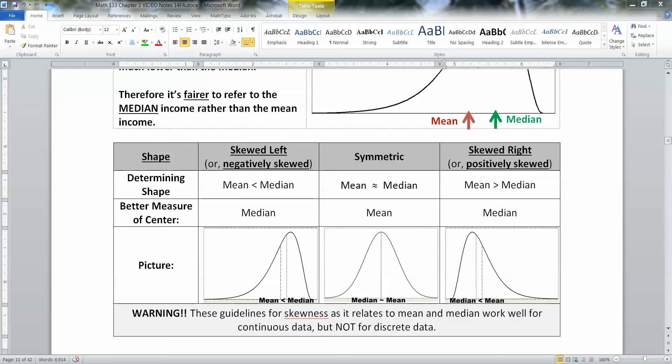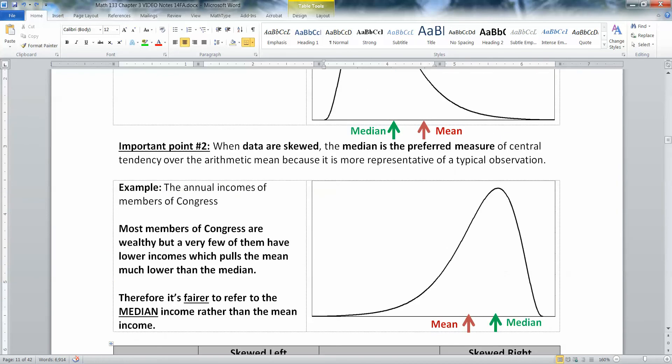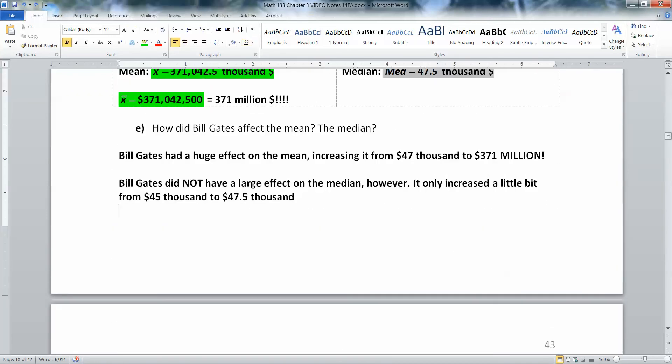Also keep in mind that this tends to work better for continuous data. This doesn't really work well for discrete data. The difference between discrete and continuous from section 1.1 is important to us. Discrete stuff will be in chapter six and continuous stuff will be in chapters 7, 8, 9, 10, 11, and 12. So they don't quite work the same. But in general, if it's skewed left, use the median. If it's skewed right, use the median. If it's roughly symmetric, they'll be basically the same, then you're better off using the mean.